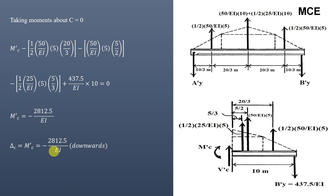To summarize the conjugate beam method: first, find the bending moment diagram for the real beam; then draw the conjugate beam and load it with the M/EI diagram; finally, find the shear and moment in the conjugate beam to get the slope and displacement at the corresponding points in the real beam. I hope this solution was clear and effective. If you have doubts, write them in the comments. Please subscribe and share the video.